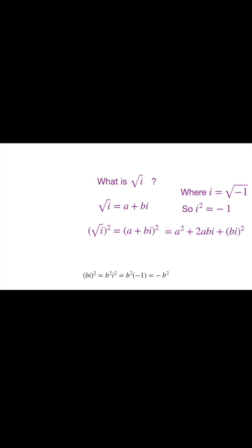And now keep in mind that bi squared is b squared i squared, and since i squared is negative 1, that's equal to negative b squared. So we can write that as i is a squared plus 2abi minus b squared.